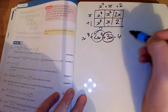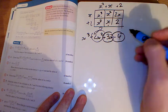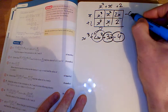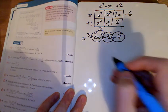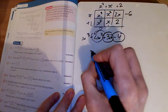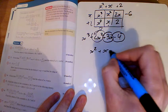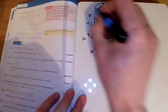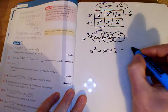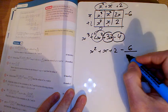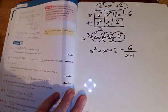We don't want 2, we want -4, so we need another -6. The answer to this question is x² + x + 2 with a remainder of -6, so that's -6 over x + 1.